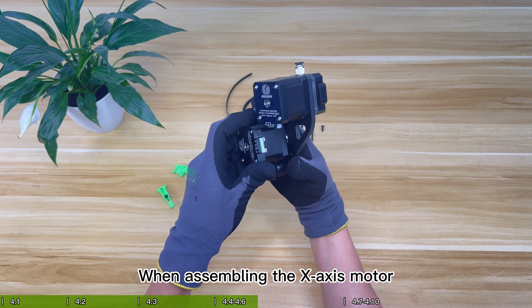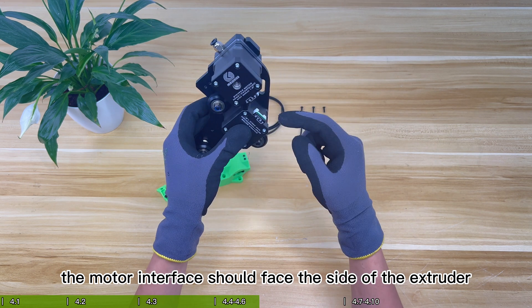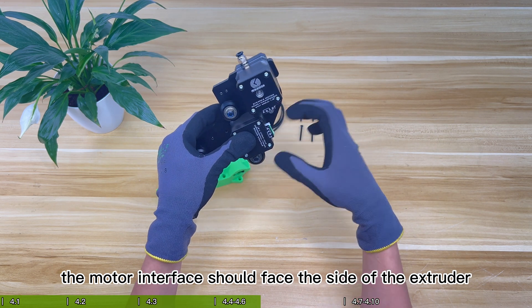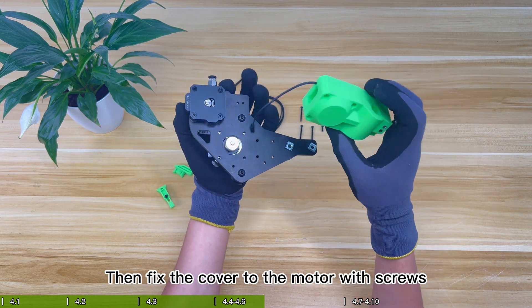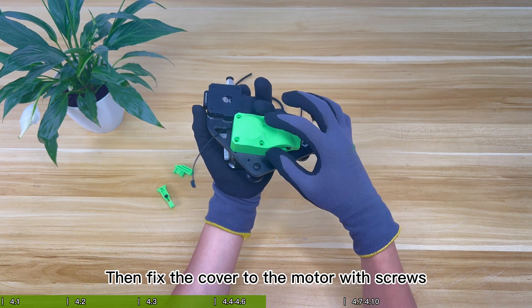When assembling the X-axis motor, the motor interface should face the side of the extruder. Then fix the cover to the motor with screws.